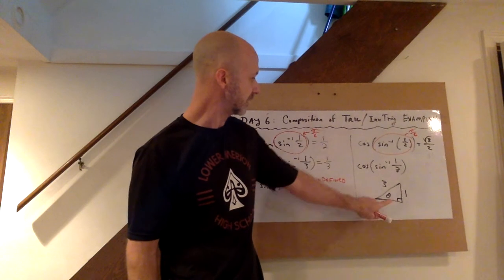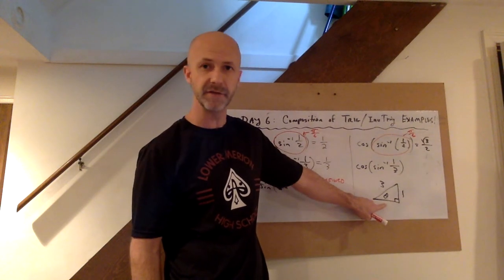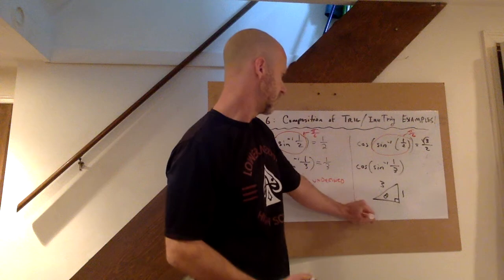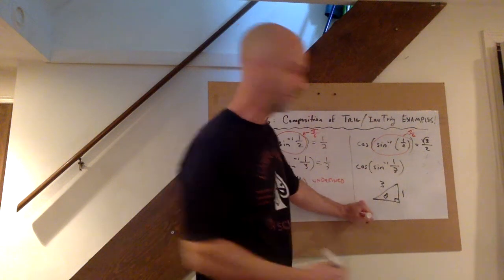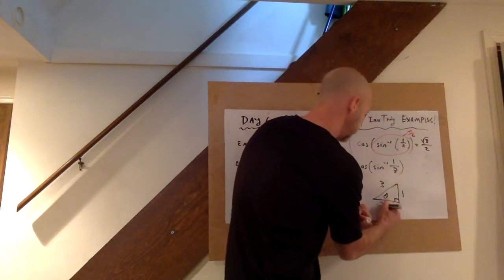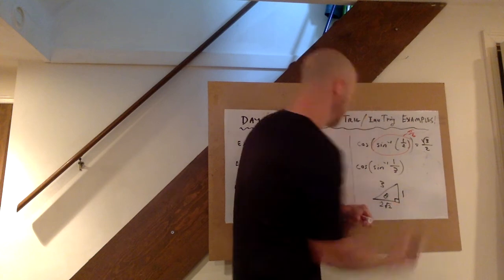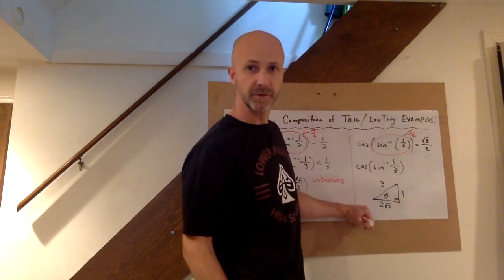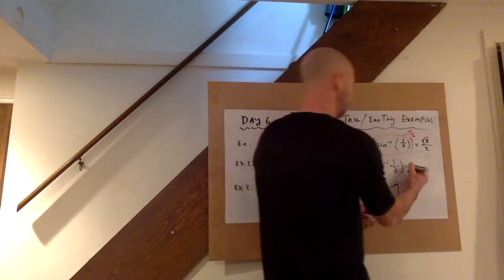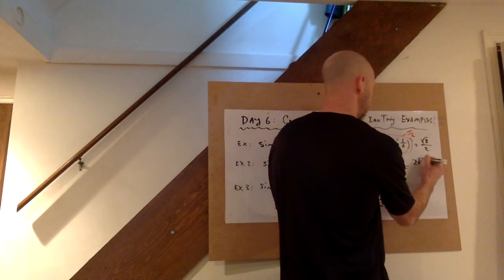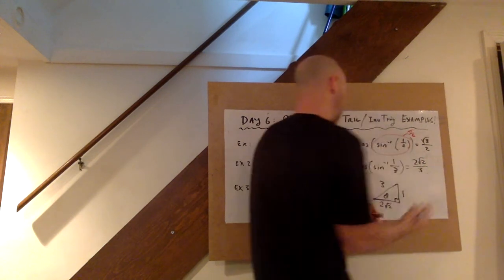And what we're being asked to find is not that angle, just kind of skip over finding that angle, find the cosine of that angle. So what I need to know is I need to know the adjacent side right here. The Pythagorean Theorem helps with that. You'll get the square root of 8 or 2 root 2, and therefore the cosine of that angle is 2 root 2 divided by 3. And that's it.